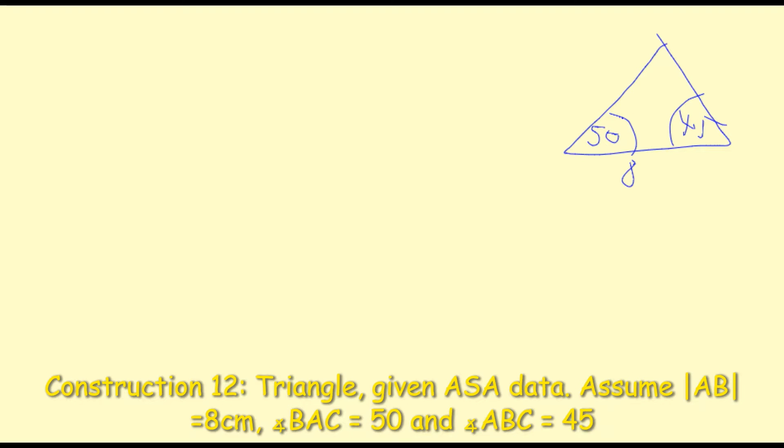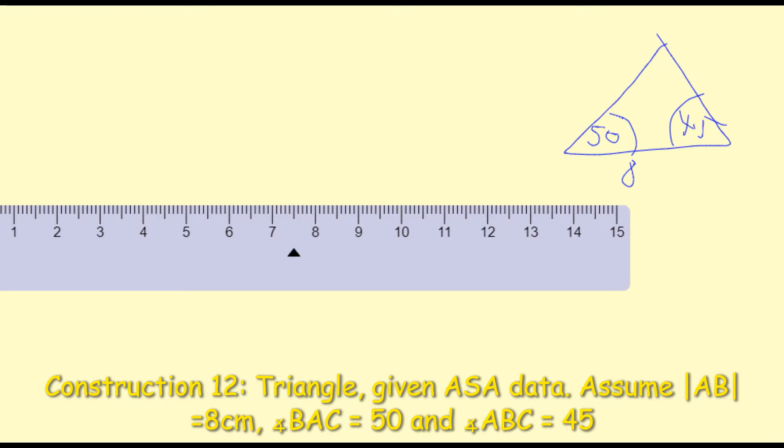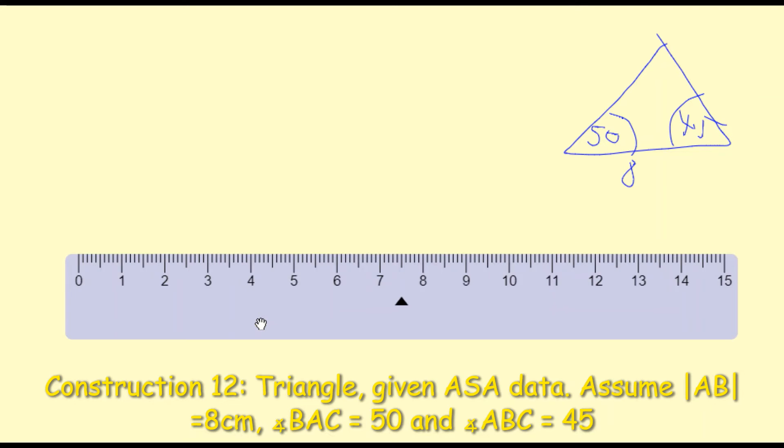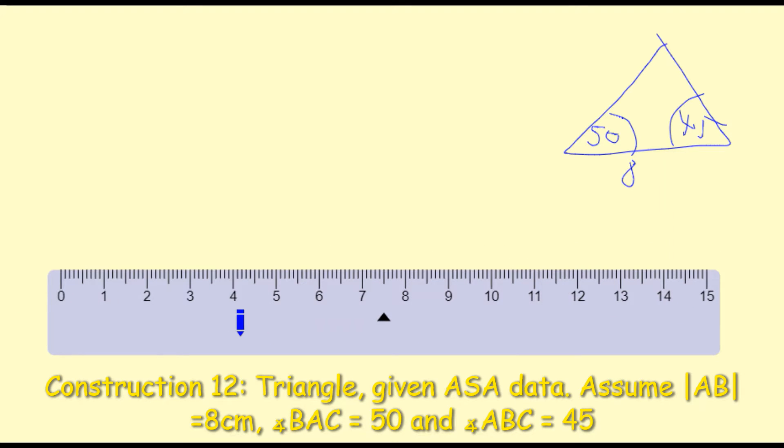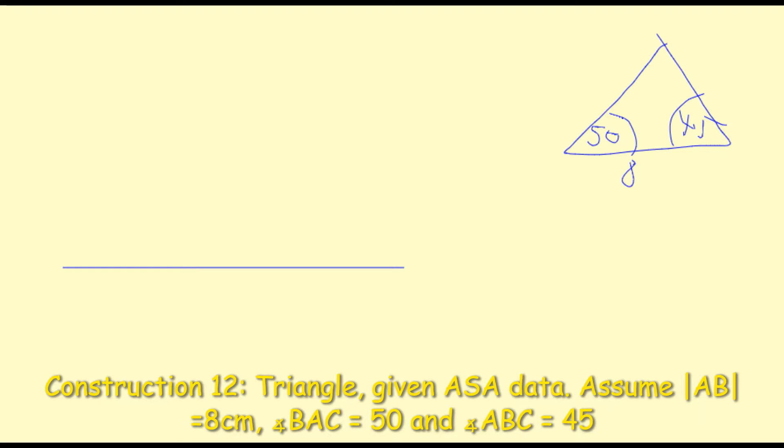First thing we're going to do is construct this line of 8 cm in length. We're going to use our ruler to construct a line segment of 8 cm in length. We draw a line of 8 cm and make it a segment by putting a dot at either end of that line. I'm labeling the points A and B for two of the corners and my third point up the top will be point C.